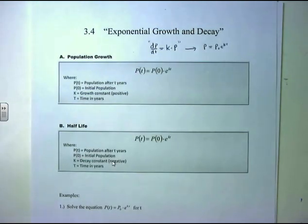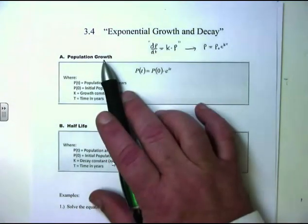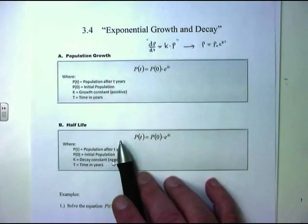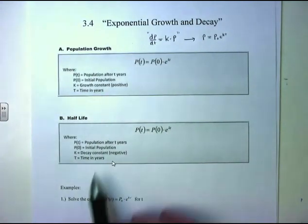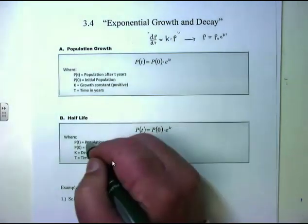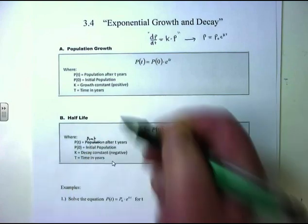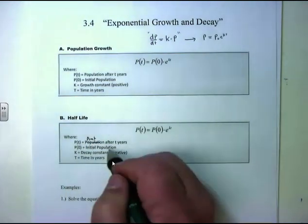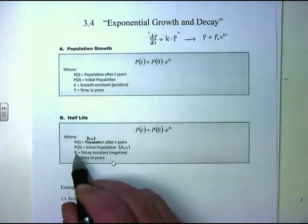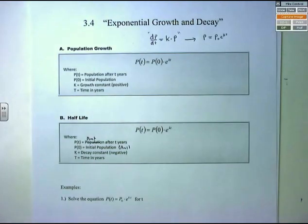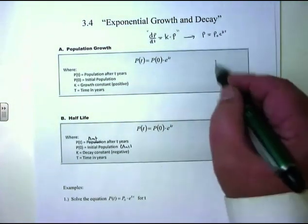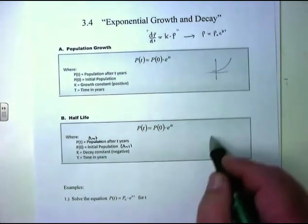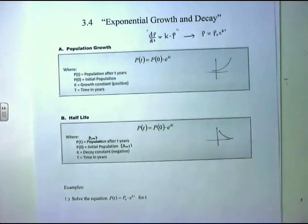The difference between population growth and population decay or half-life problems is the sign of K — it's the same formula: P of T equals P of zero times E to the K times T. When K is positive, you have growth. When K is negative, you have decay. P of T may represent a population or simply an amount. And T is time measured in whatever units are relevant.